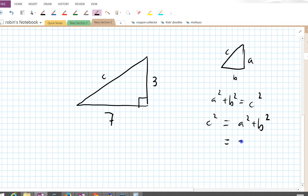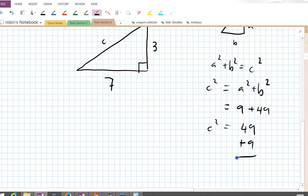That one's 3, 3 squared is 9, plus 49. So c squared is 49 plus 9, 8 down 1 to carry, 148.